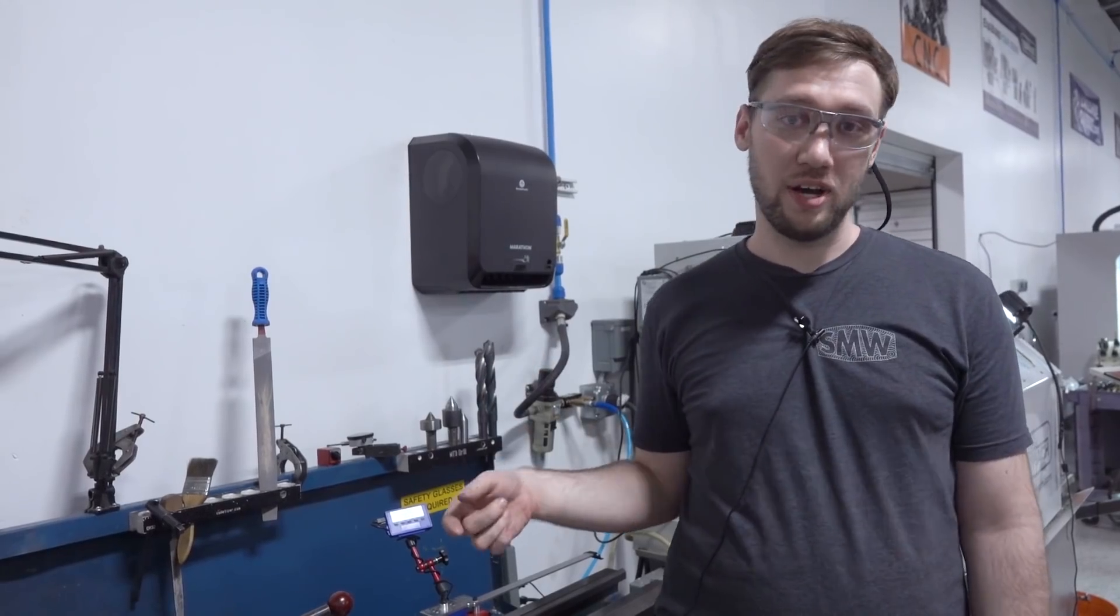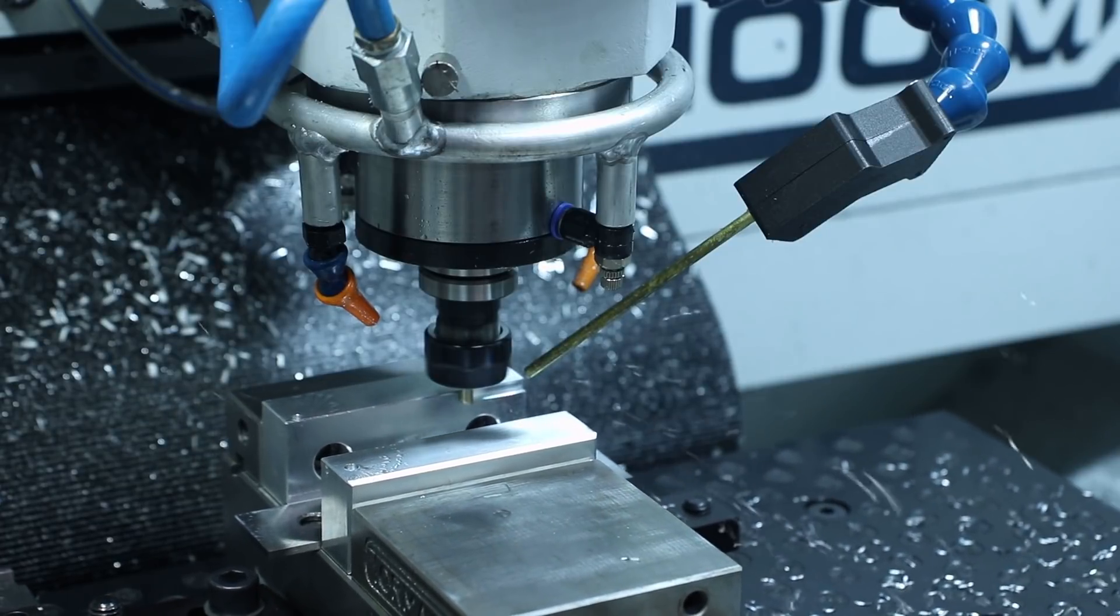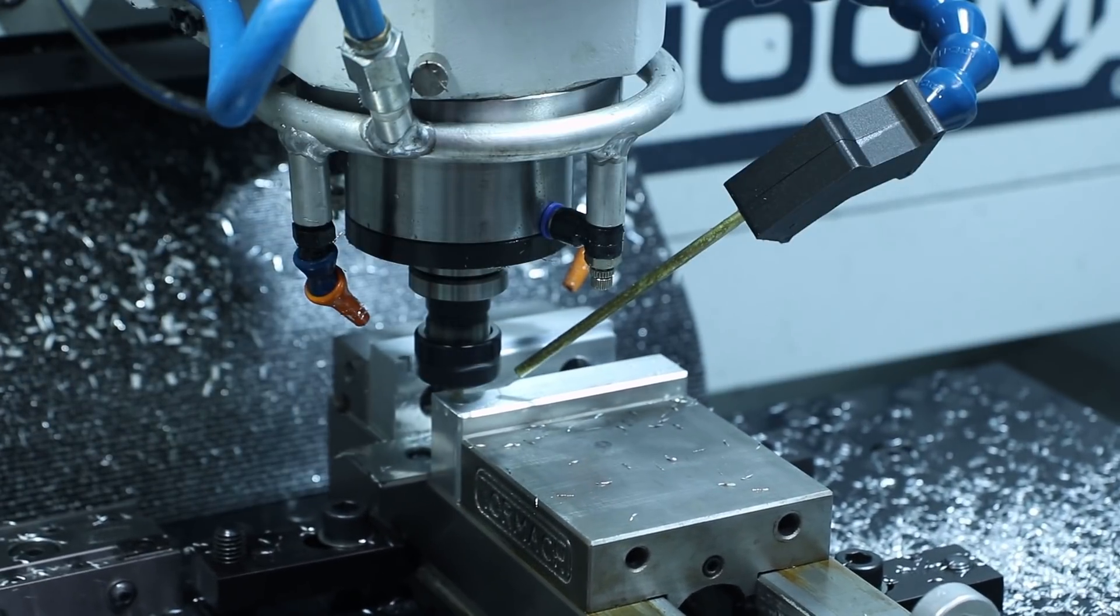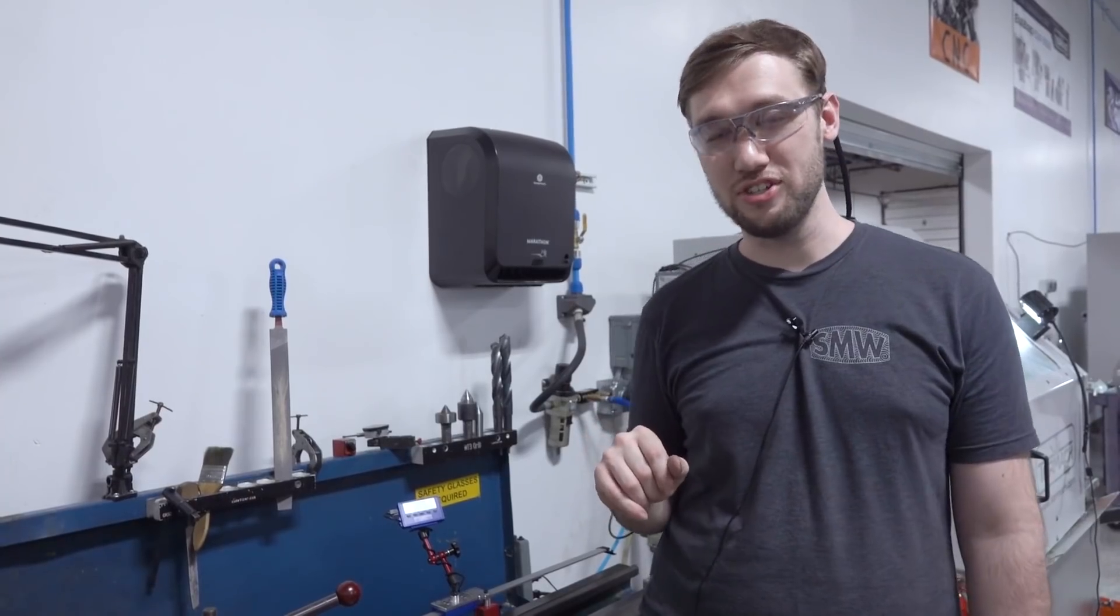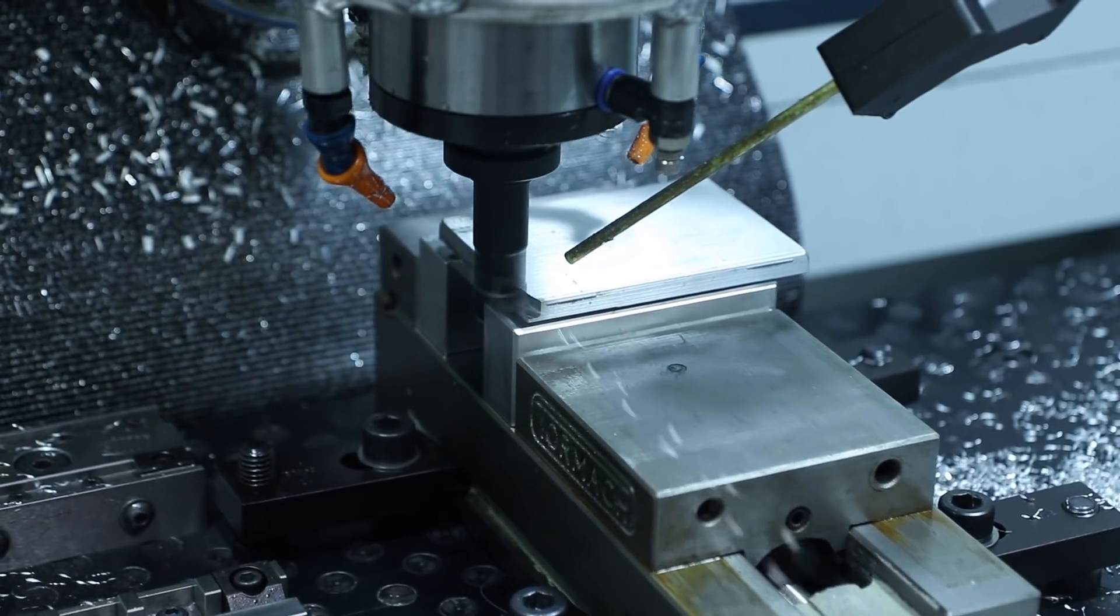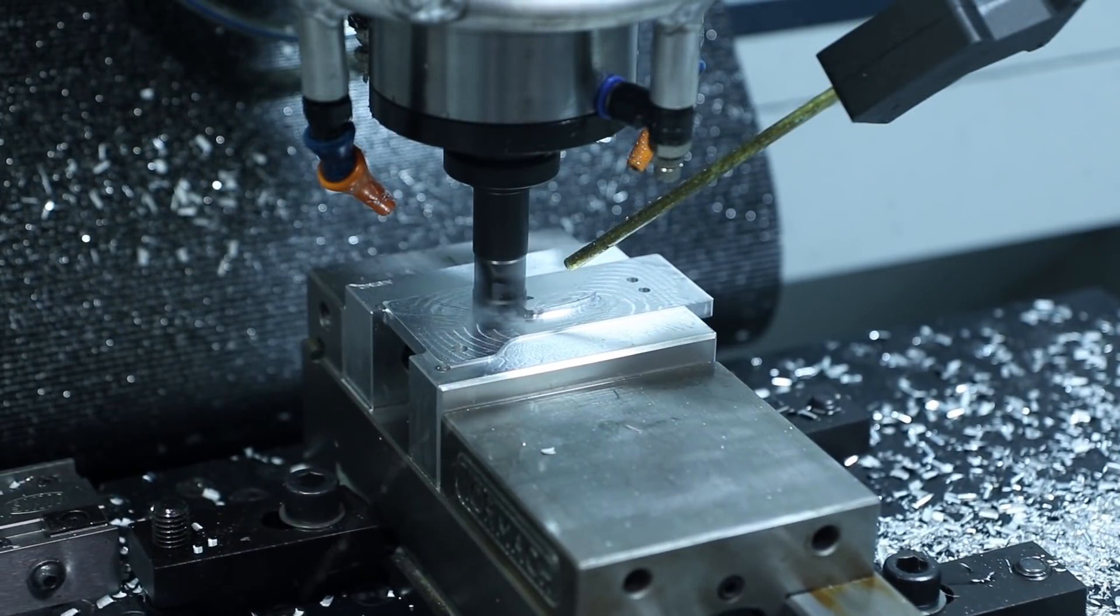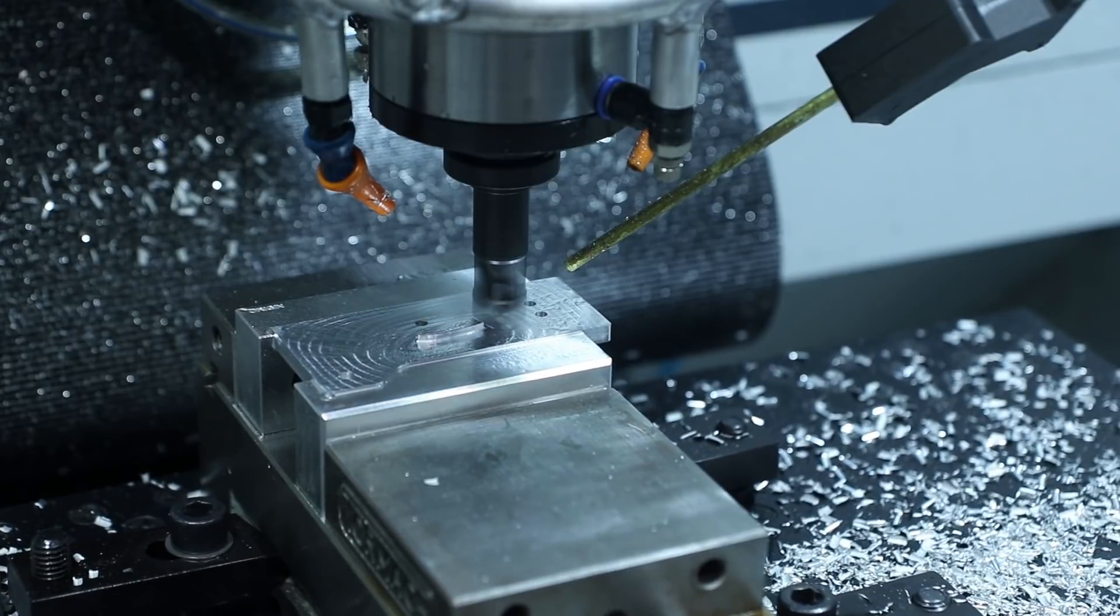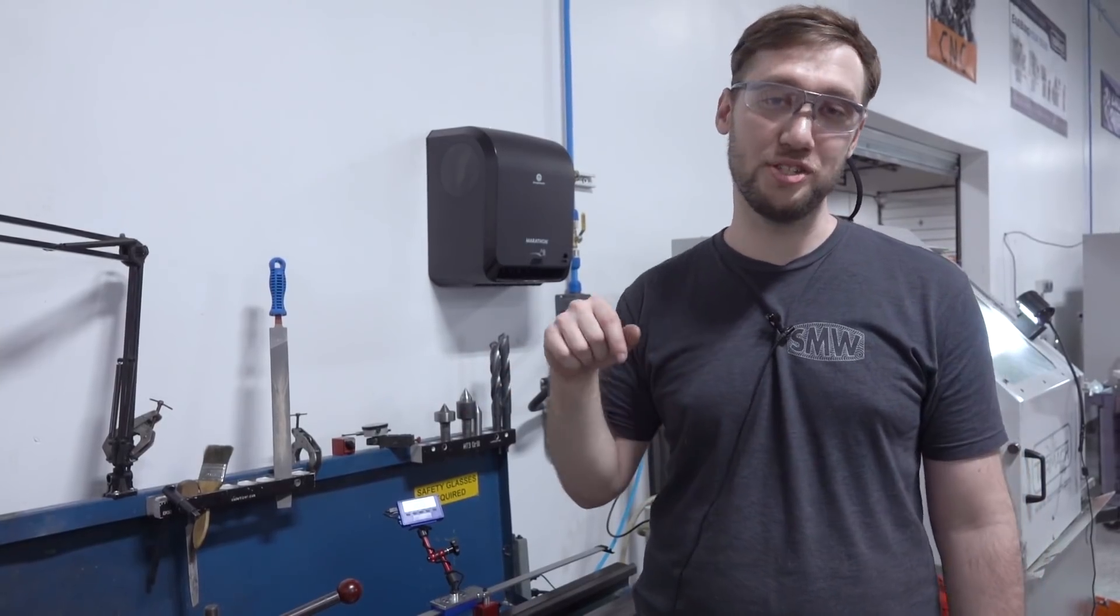For op 2 I used a 4 jaw vise and made some quick soft jaws. Flipped it, roughly decked off the back side using the shear hog and finished it up with a superfly and some chamfers.